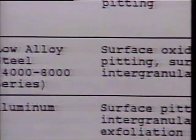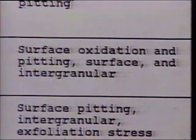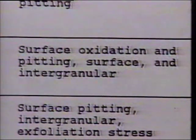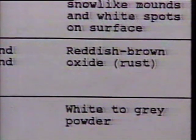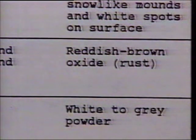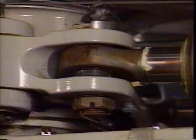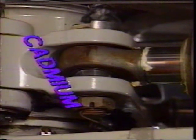Low alloy steels are vulnerable to surface oxidation, pitting, and intergranular corrosion. The reddish-brown product which is formed is rust, something which is easy to recognize. When corrosion attacks stainless steel, the surface darkens and becomes rough. Corrosive environments and industrial pollutants will cause corrosion on stainless.